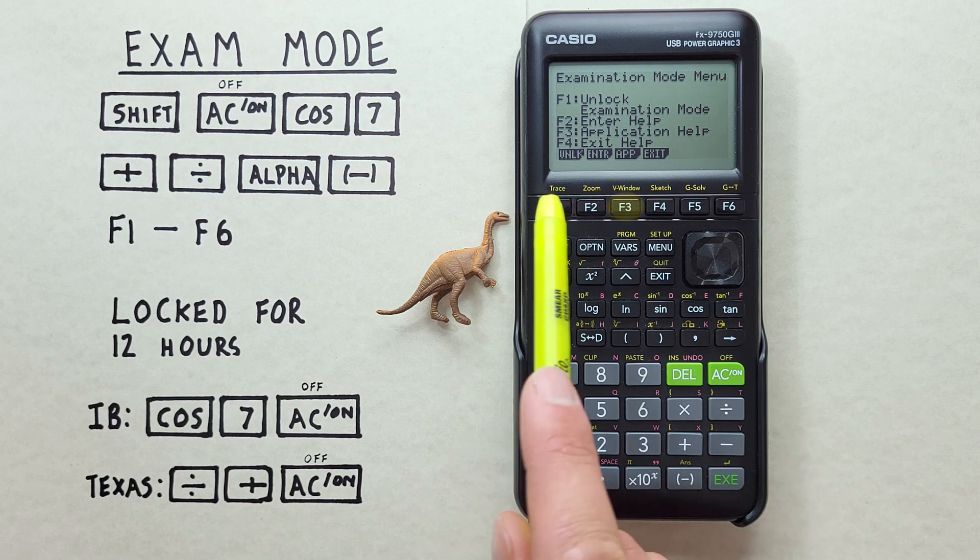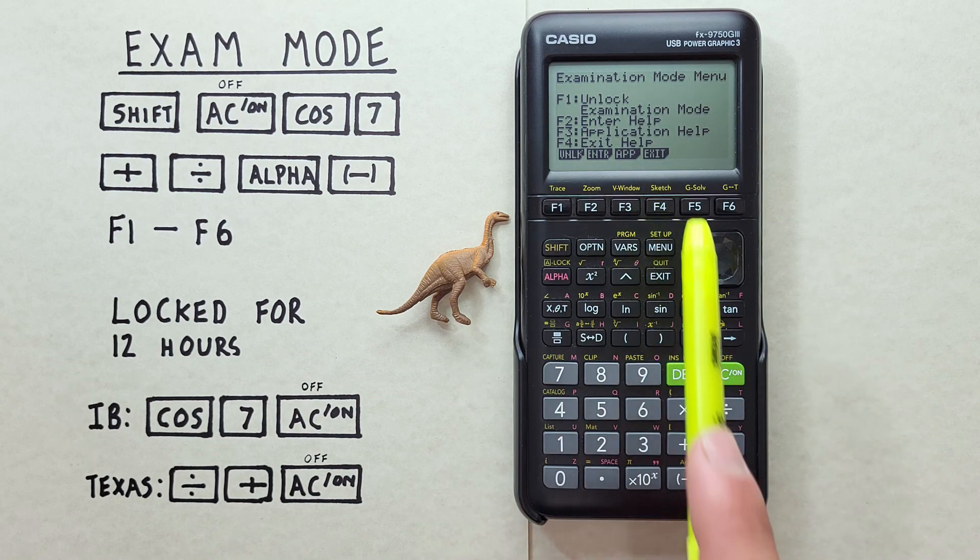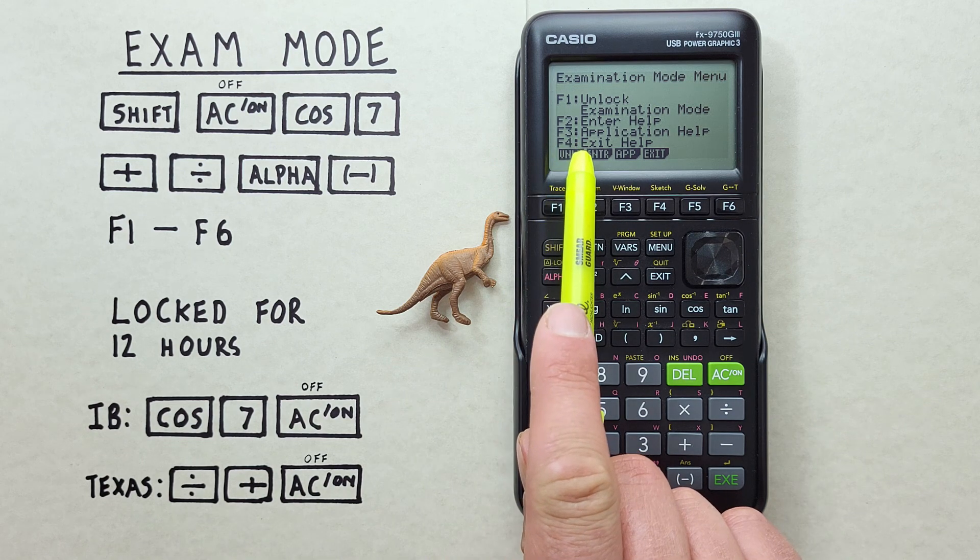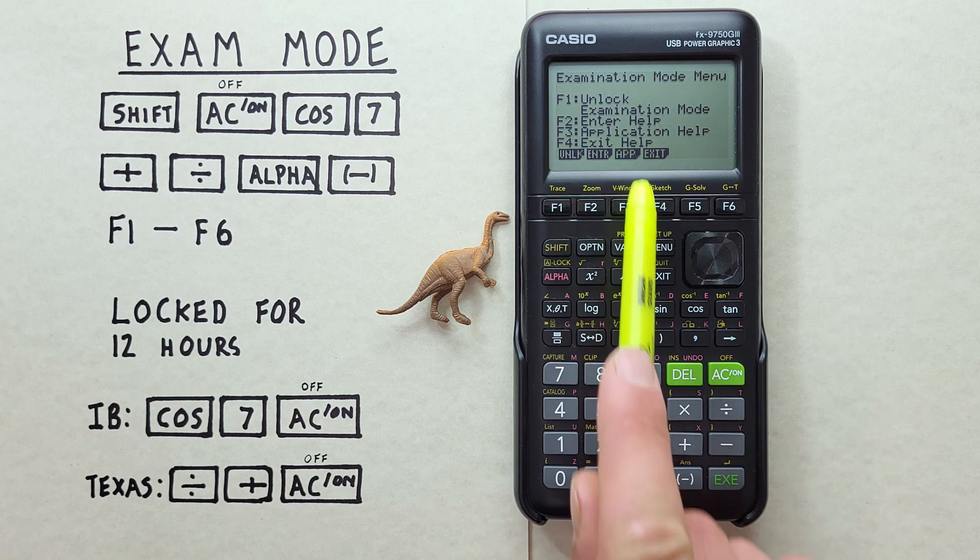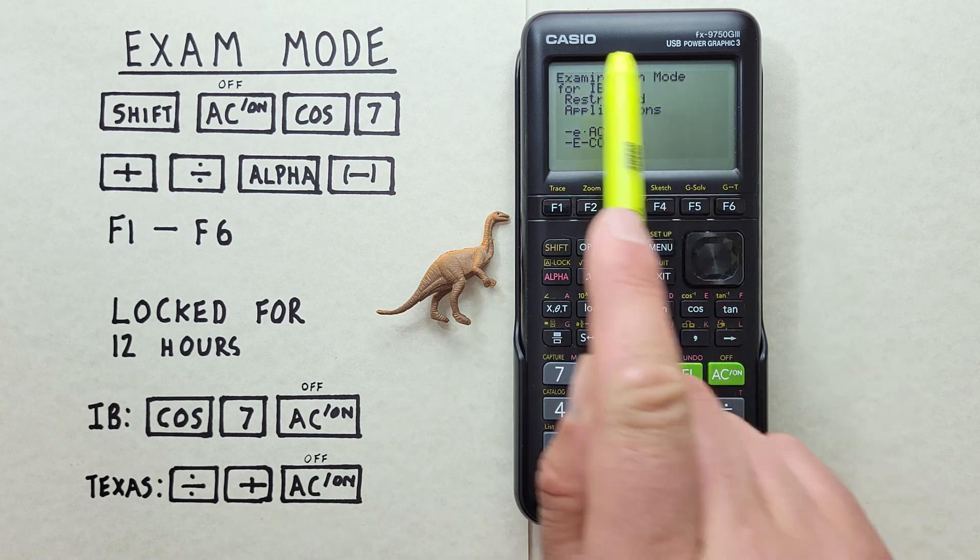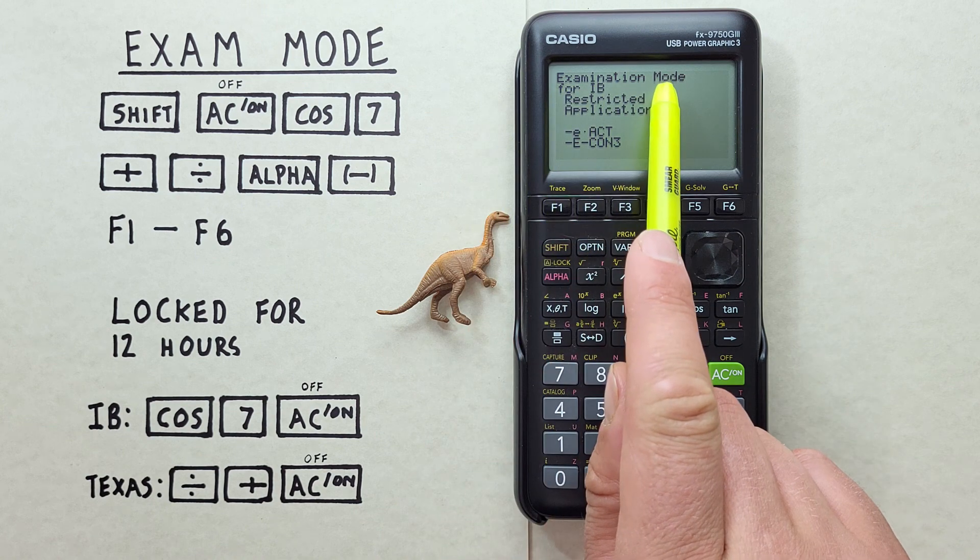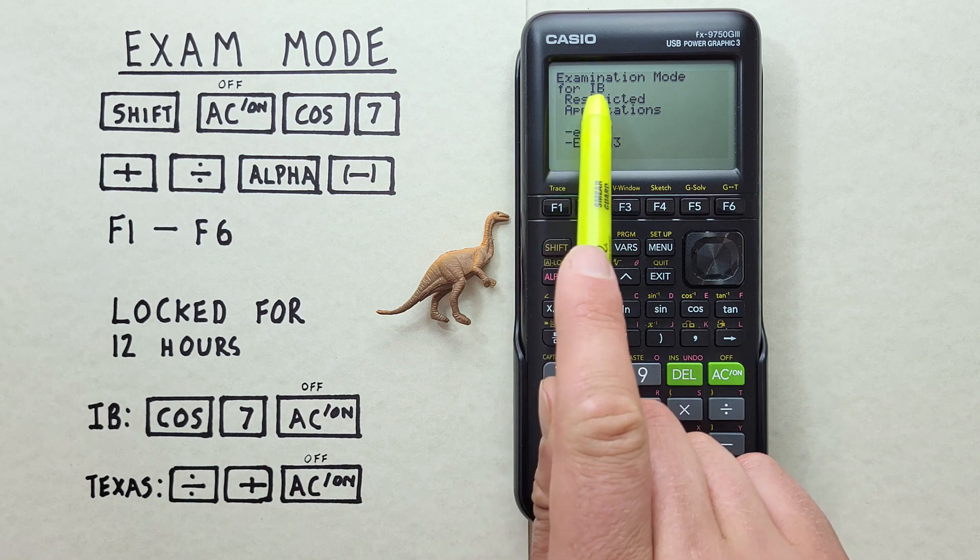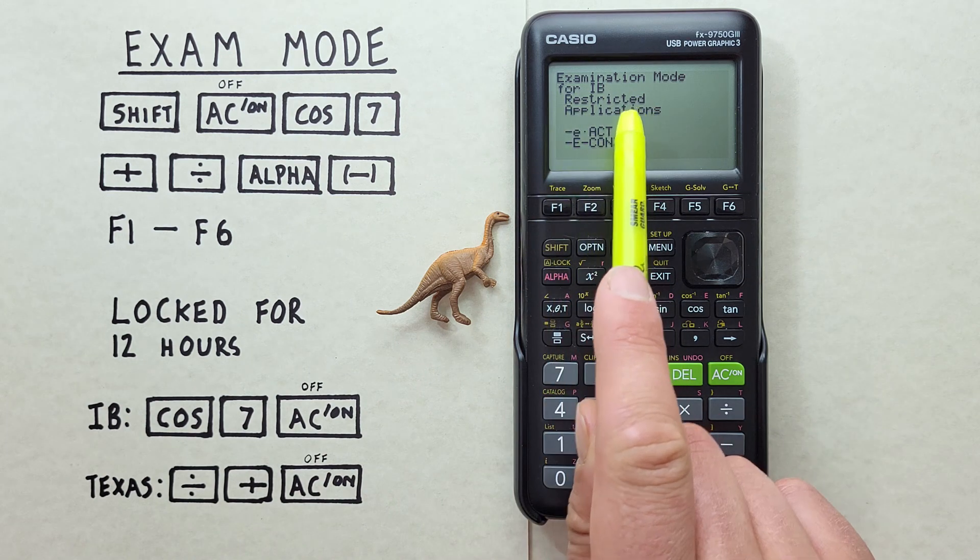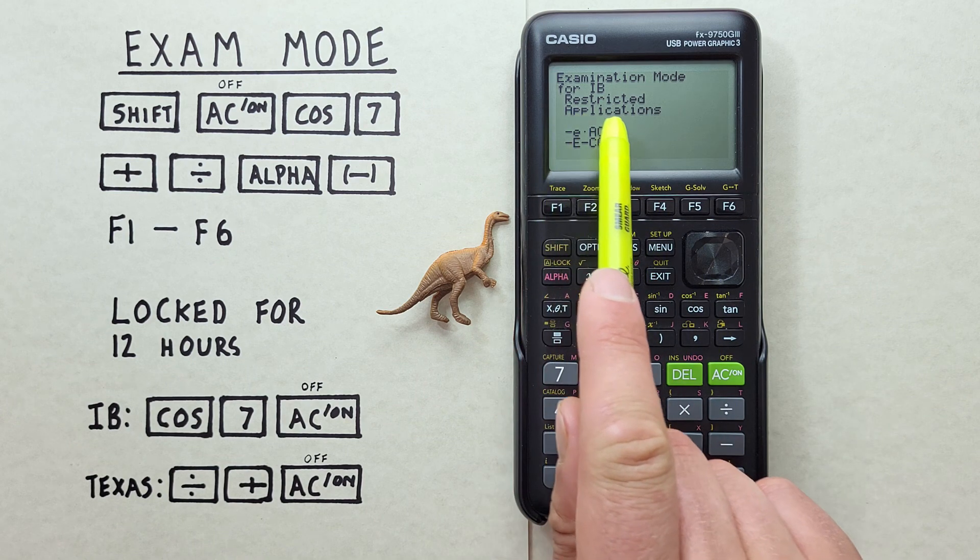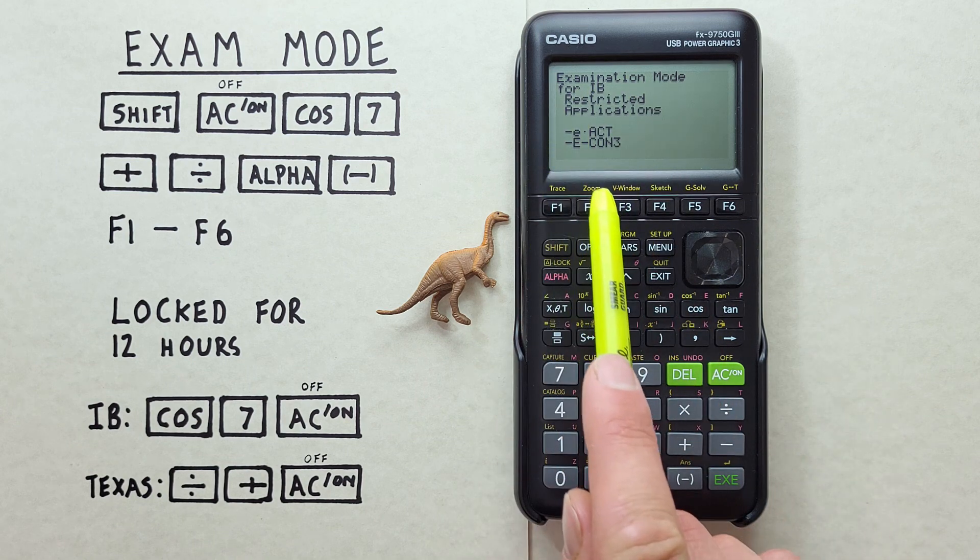That brings us to the Exam Mode menu here. This calculator has two different types of exam mode. We can see them by hitting F3 to go to the Application Help screen. So we hit F3. That brings us here, to the Examination Modes. And the first one we see is Examination Mode IB, or International Baccalaureate. If we scroll down, we see the different restrictions that this Examination Mode has.